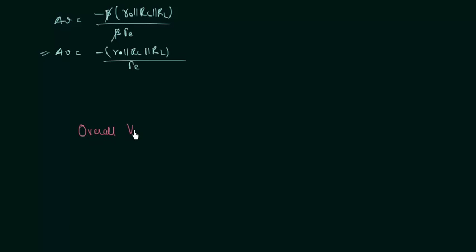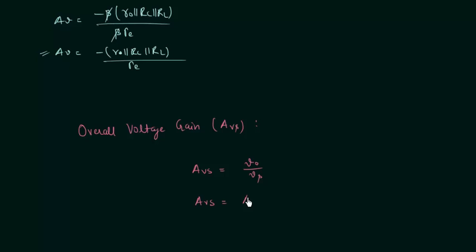The overall voltage gain is represented by A subscript Vs, and it equals the ratio of output voltage to the source voltage: A_Vs equals V_O divided by V_S. The expression is: A_Vs equals the voltage gain multiplied by input impedance divided by input impedance plus source resistance. If you want to know how this result is derived, please watch the H-parameters lecture where this derivation is explained.